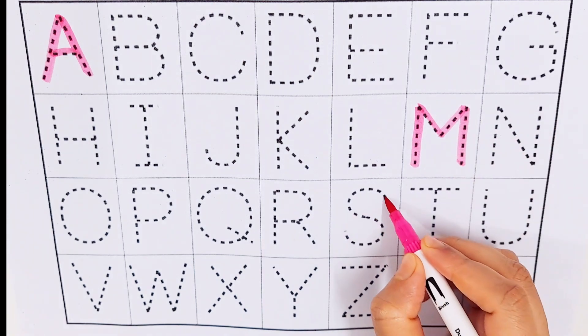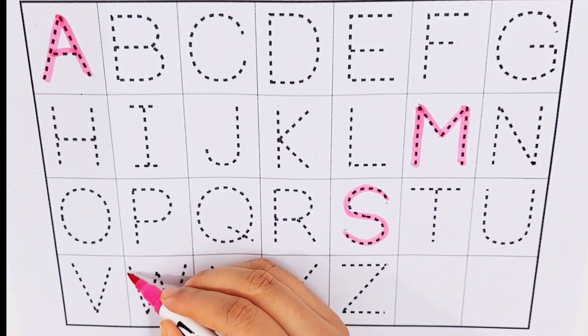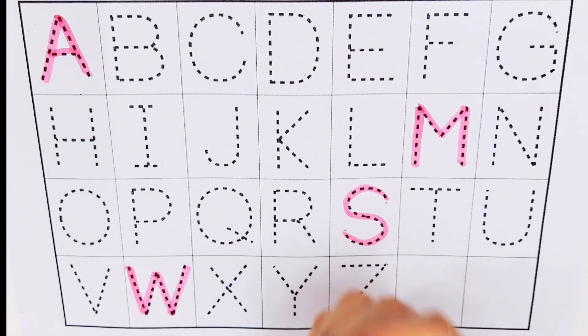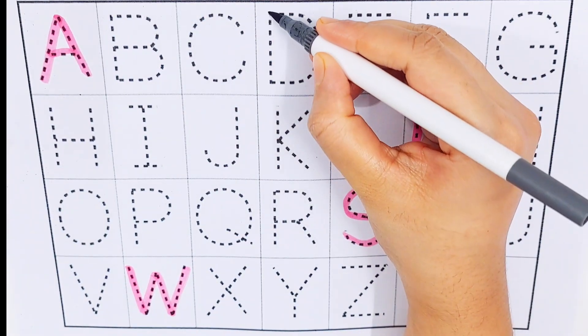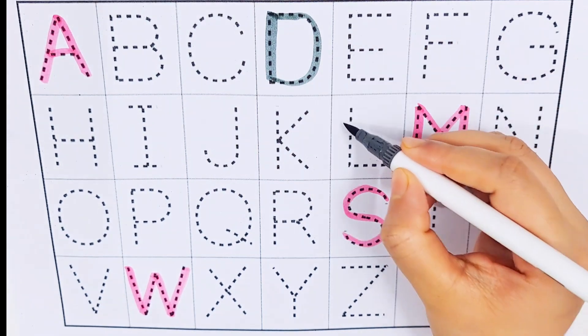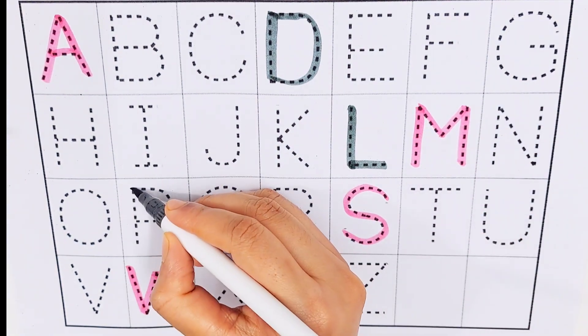Gray color. D D for door, L L for lychee, P P for pen, Z Z for zipper.